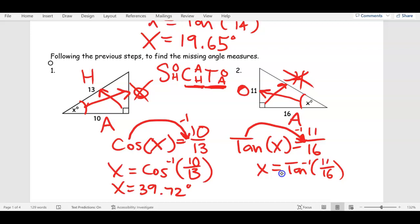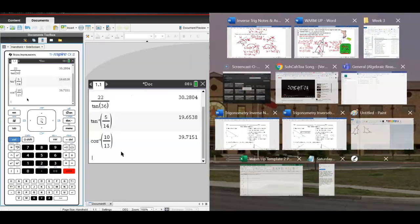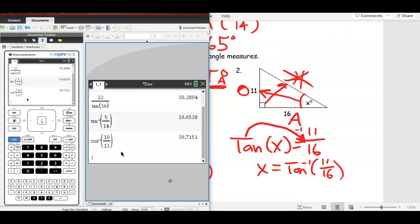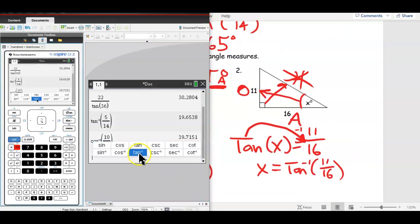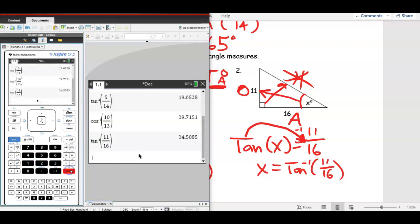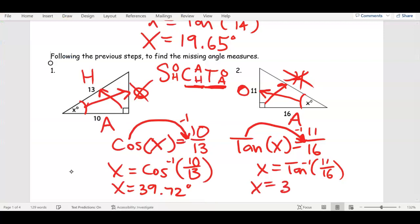All right. Now, let's type it in our calculator. TAN inverse, 11 over 16. So, TAN inverse, 34.508 makes the zero go up to 34.51. And our units of measure are degrees.